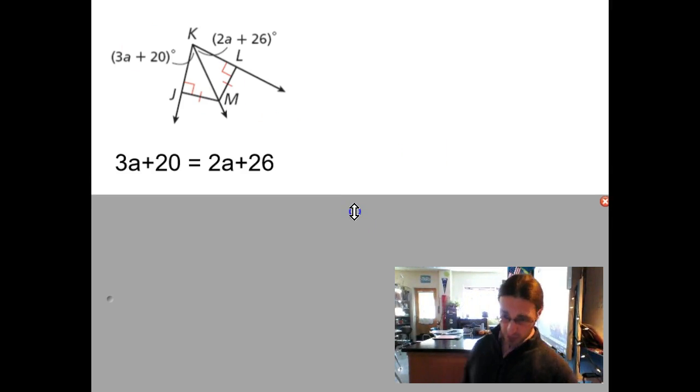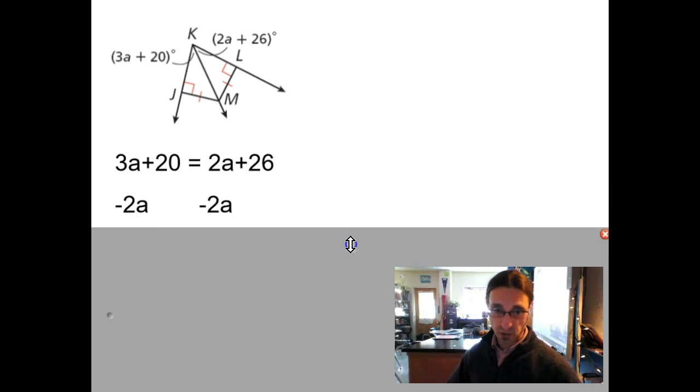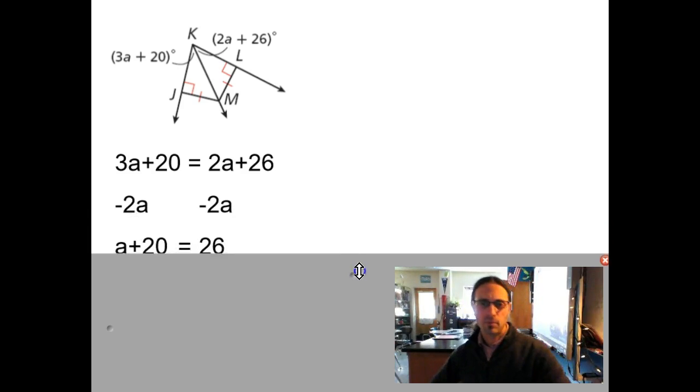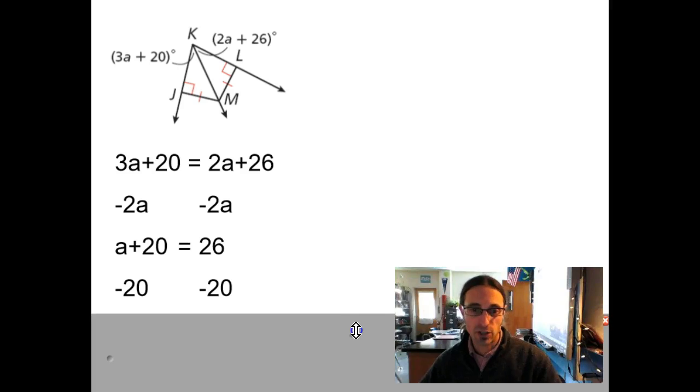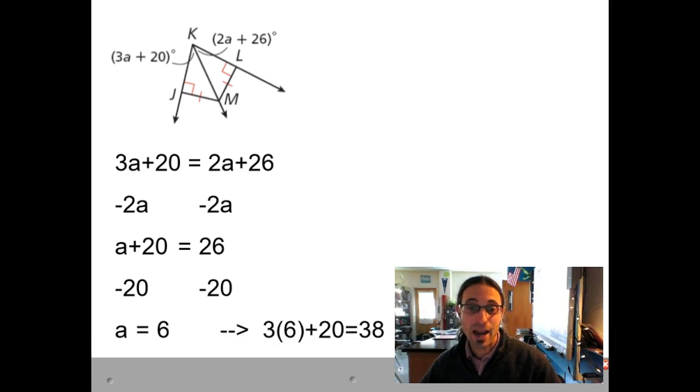Okay, we're back. So now solve for your expression. Subtract 2A from both sides. Subtract 20 from both, and you get A is equal to 6, which means each one of those angles has to be 38 degrees.